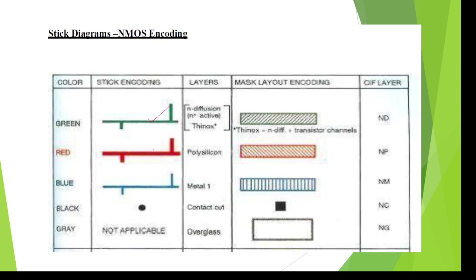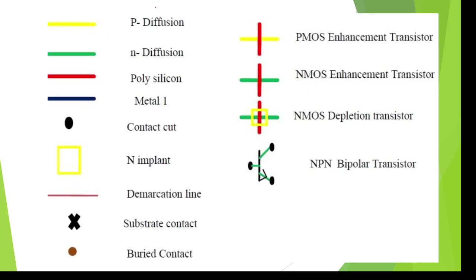The symbols are: green color for N-diffusion, red for polysilicon, blue for metal, black for contact cut. The layer diagram symbols — a box with straight lines is the metal symbol, a box with left-side lines is polysilicon, and a square black color is the contact cut. The transistor symbol is poly over P-diffusion, or P-diffusion over poly.